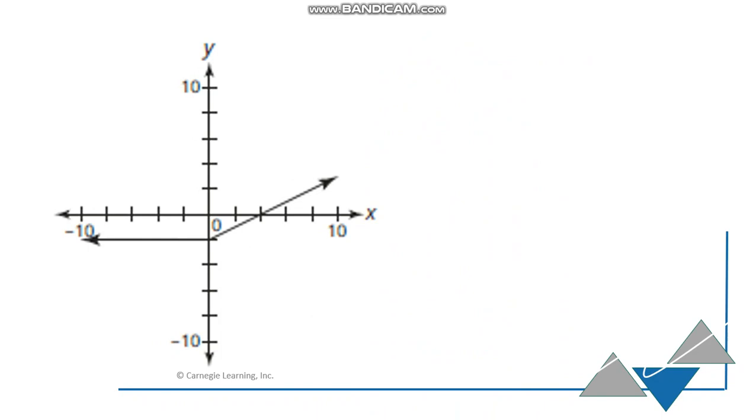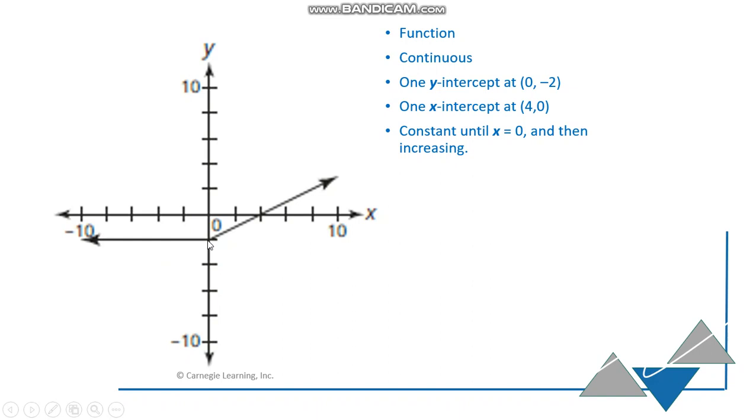Alright, another function from the book. This is a function. It passes my vertical line test. It's continuous. There is one y-intercept right here. This is at 0, negative 2. One x-intercept here at 4, 0. This function is constant until x equals to 0 and then it's increasing. The domain is all x values. If I squish it down to this axis, it covers the whole thing. But if I squish it up against the y-axis, this vertical axis, I can never cover this part of the number line. So my range is y greater than or equal to negative 2.